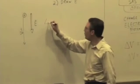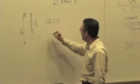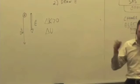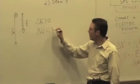So delta K would be greater than zero, but the potential energy of the system would decrease. Delta U would be less than zero.